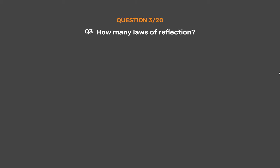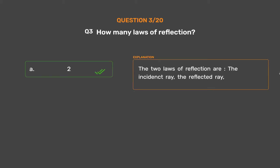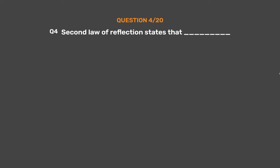Question number 3: How many laws of reflection are there? Option A: 2. Option B: 3. Option C: 4. Option D: 5. The correct answer is Option A, 2. The two laws of reflection involve the incident ray and the reflected ray.